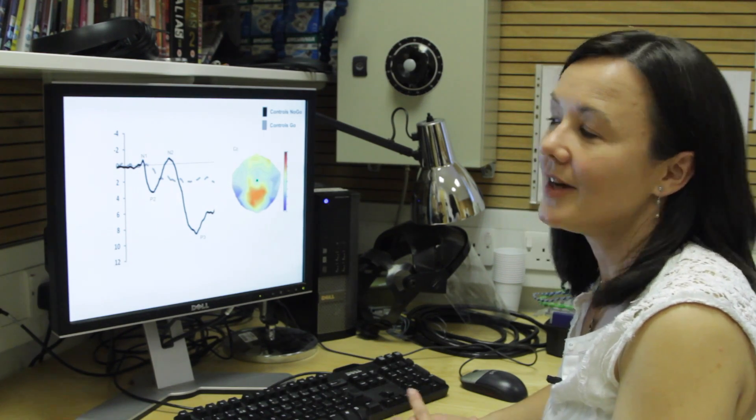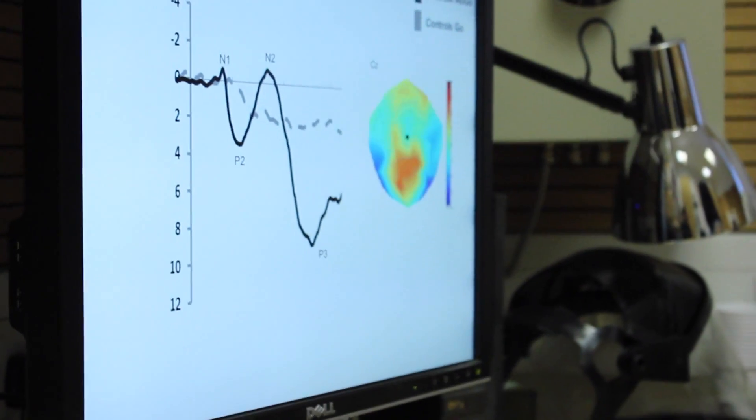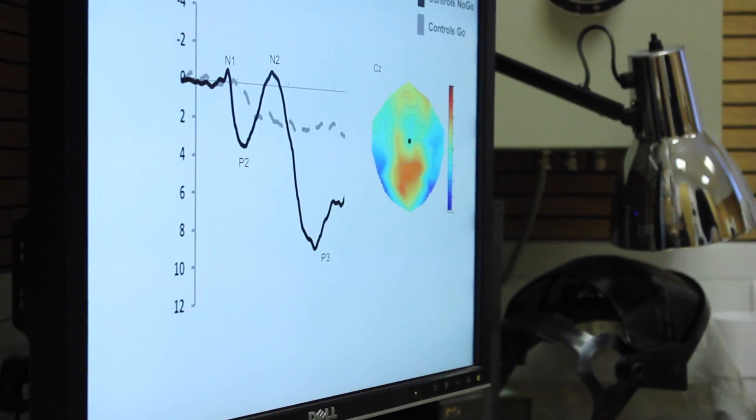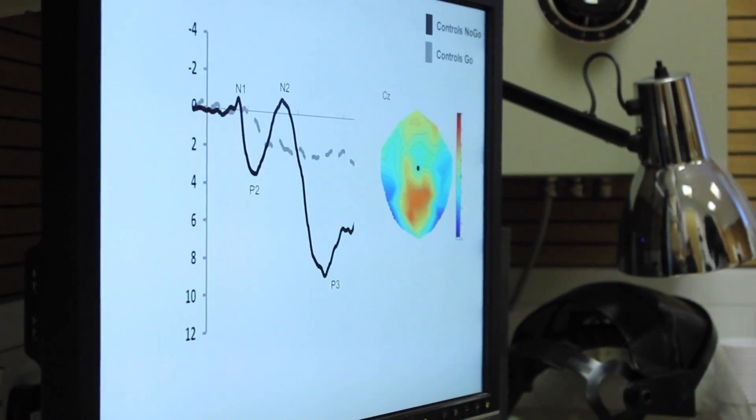Here we have the EEG results from those successful no-go trials in the healthy control group. You can see the no-go trials have a very classic signature of a P2, N2, and a P3. These are very much enhanced for the no-go trials compared to the go trials.